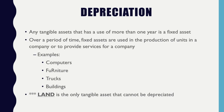Depletion and depreciation are similar concepts but use different terminology for different types of assets. Similarly, amortization applies to intangible assets. So: tangible fixed assets are depreciated, land is depleted, and intangible assets are amortized — they all do essentially the same thing: devalue the item over time.